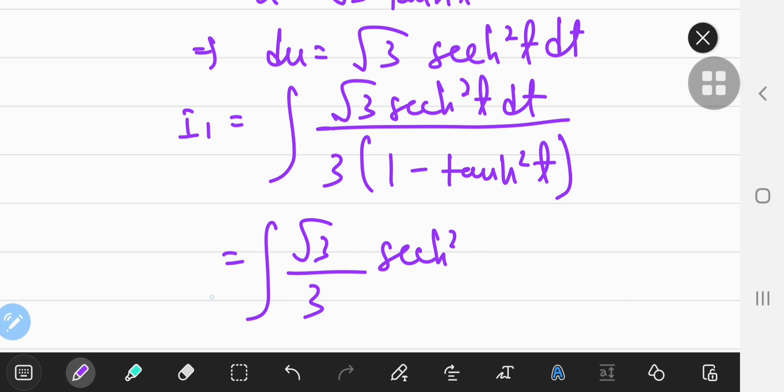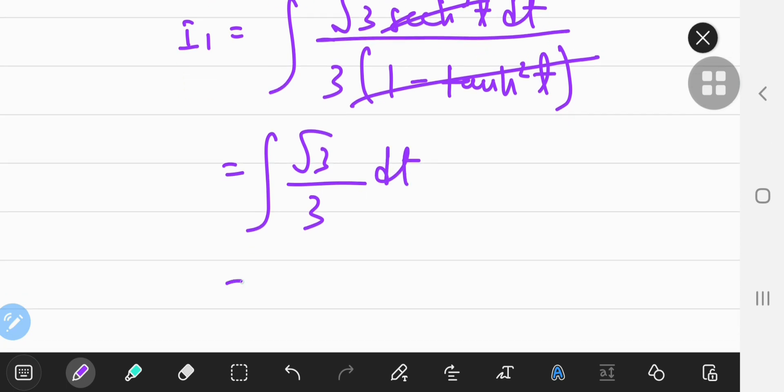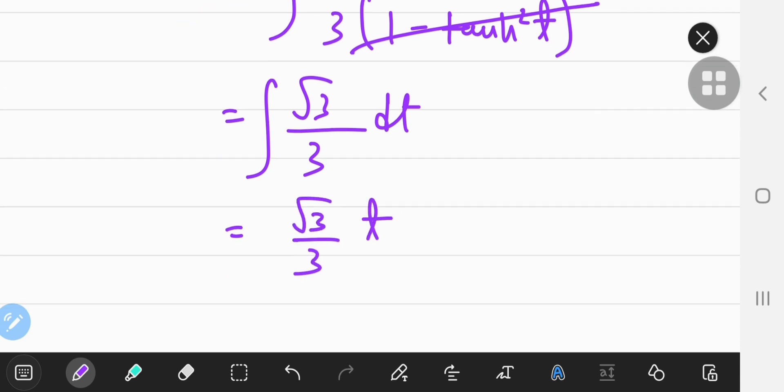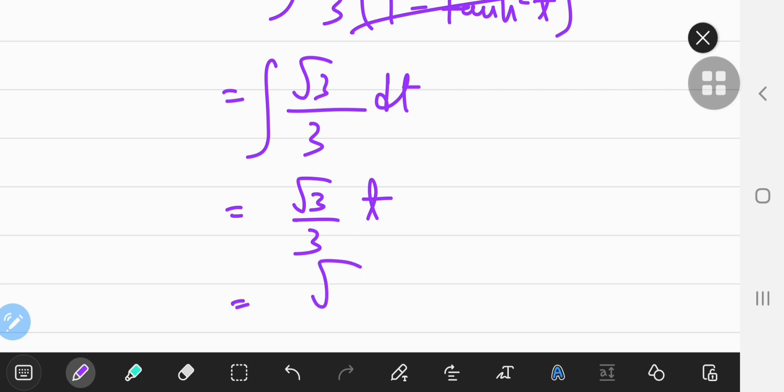So secant hyperbolic squared and secant hyperbolic squared cancel out, and you're left with just a constant in the integrand. So that's going to be square root 3 by 3 times t, and t is the tan hyperbolic inverse of u.